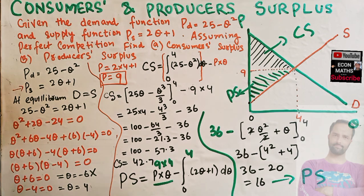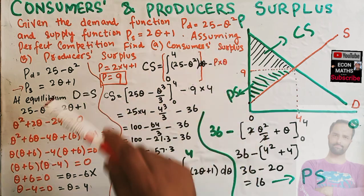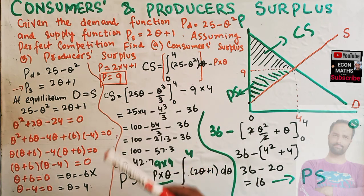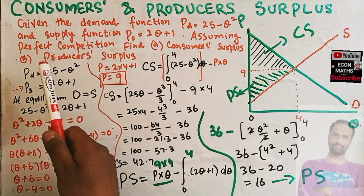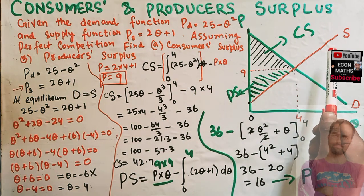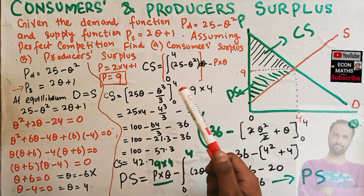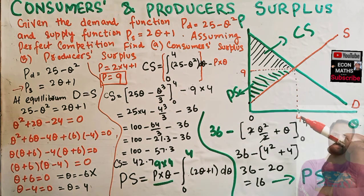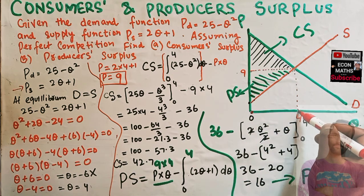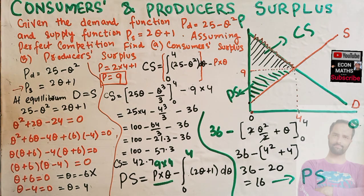To summarize: we were given demand and supply functions under perfect competition and asked to find consumer and producer surplus. First, we found equilibrium price and quantity by equating demand and supply — intersection occurs at q = 4 and p = 9. Then we calculated consumer surplus as 42.7 and producer surplus as 16 using definite integrals of the demand and supply functions respectively.